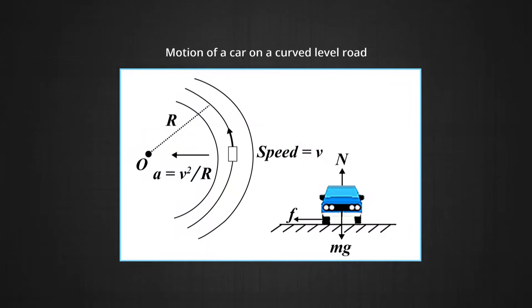Before we talk about the Banking of Roads, we will talk about the motion of a car on a curved level road. Consider a car of weight mg going around a circular level road of radius r with constant speed v. As you can see in the diagram, the car is moving with constant speed v along the circular path. The forces acting on the car are shown in the free body diagram: weight of the car acting vertically downwards, normal reaction, and friction force acting inwards towards the centre of the circle.